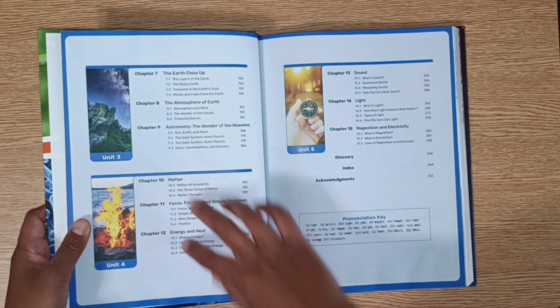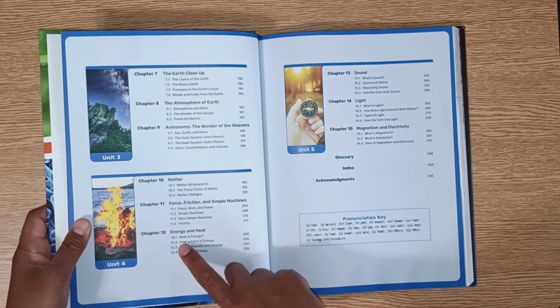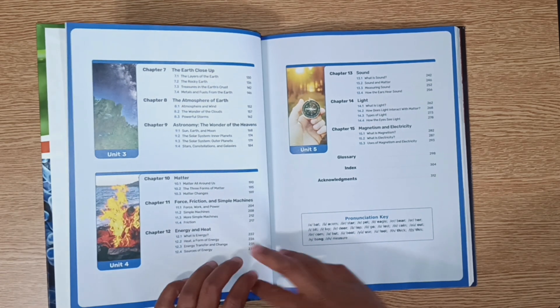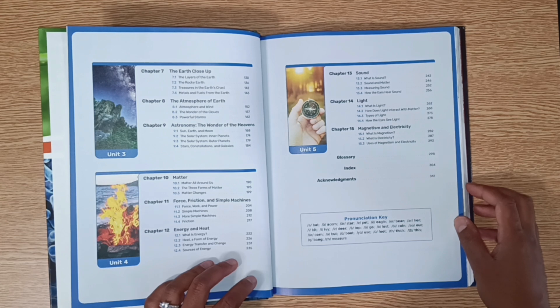Chapters 10 through 12 cover matter, force, friction, simple machines, energy, and heat. And finally, chapters 13 through 15 cover magnetism and electricity.